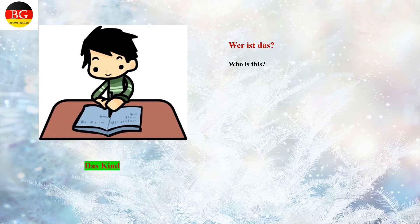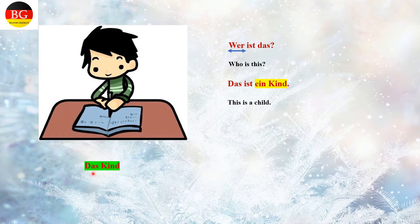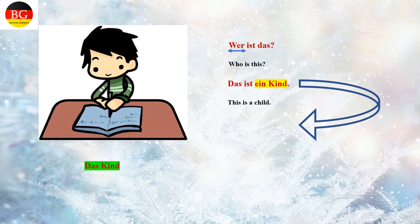Wer ist das? Das Kind — what is he doing? He is writing something. So how do we use the unbestimmter Artikel? Das ist ein Kind. 'Das' is the bestimmter Artikel and 'ein' is the unbestimmter Artikel for 'Kind'. In order to describe the Kind, we use the bestimmter Artikel: 'Das Kind schreibt' — the child is writing.